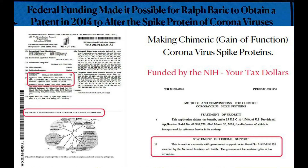Here is an interesting one: when you ask point blank whether the United States government has funded any research on coronavirus spike proteins, that patent comes up — and it was paid for by NIH and NIAID. So if you're sitting before Congress under oath and asked by a senator whether you've done this, you shouldn't have those patents floating around where people like me can find them.